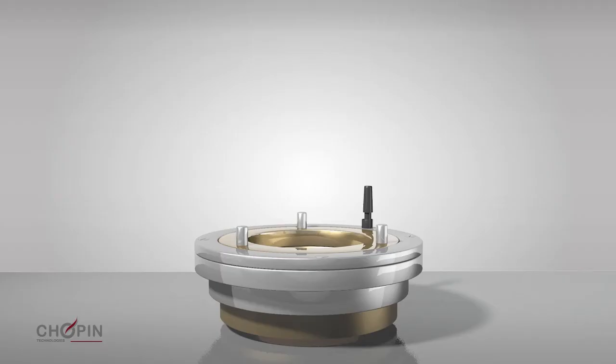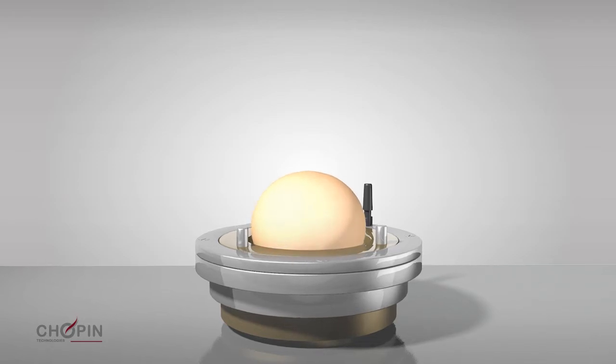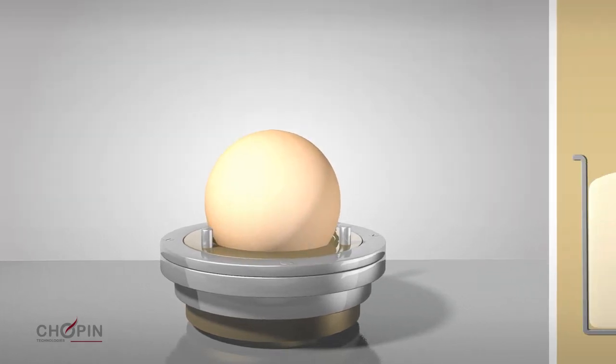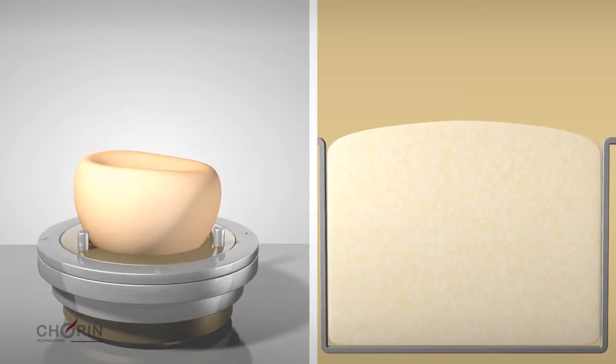An alveograph test involves measuring the deformation of a dough bubble caused by a specific pressure generated using air. This dough extension method simulates the deformation the dough undergoes during fermentation due to the pressure generated by carbon dioxide.